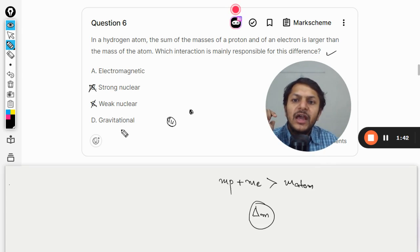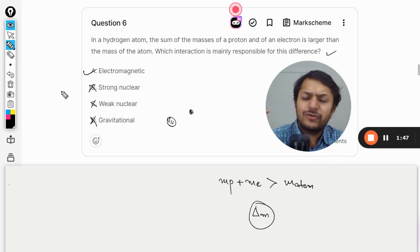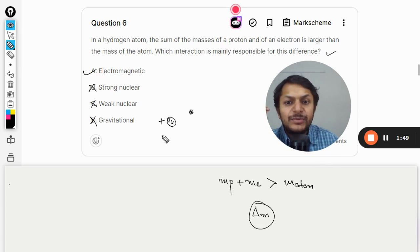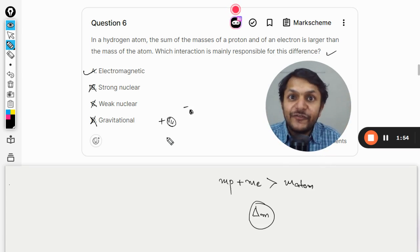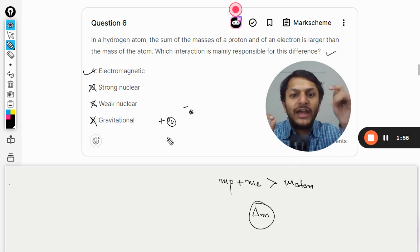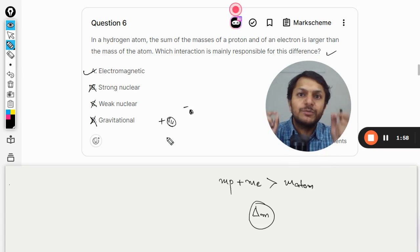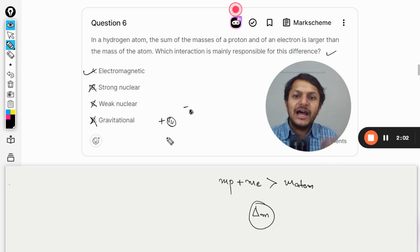So our answer will be electromagnetic interaction. This is positive and this is negative and we know it from the theory given by Bohr, theory given by Rutherford, that this electron is experiencing a coulombic force because of the proton which is actually acting like the centripetal force and that is why the electron is revolving around the nucleus. So we know that electromagnetic interaction is taking place inside an atom.